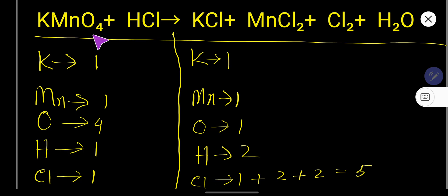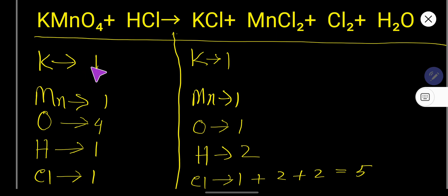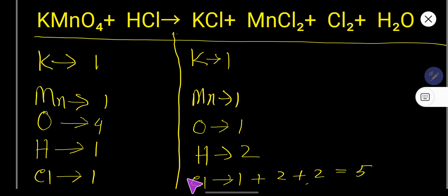How to balance KMnO₄ plus HCl that produces KCl, MnCl₂, Cl₂, and water. To balance this equation you have to balance the number of potassium, manganese, oxygen, hydrogen, and chlorine atoms from both sides. In the left-hand side we have one potassium and one manganese — both balanced. Oxygen is 4 on the left and 1 on the right. Chlorine is present in 3 compounds, so balance the atoms present in only one compound first — that means balance oxygen or hydrogen first.